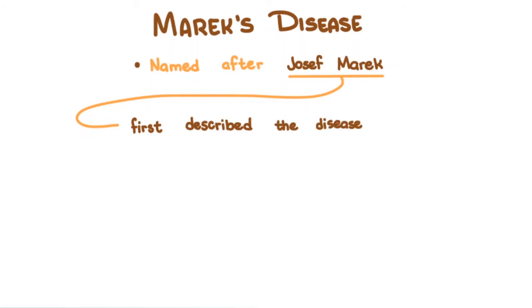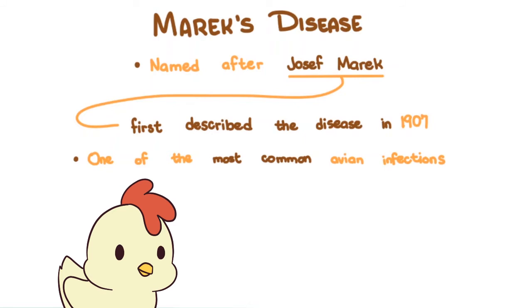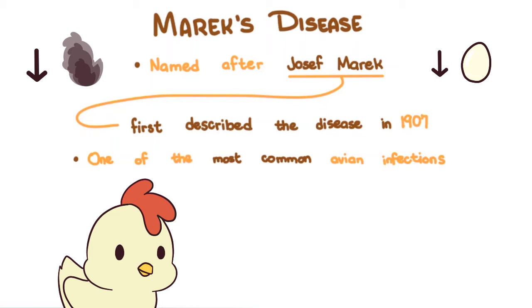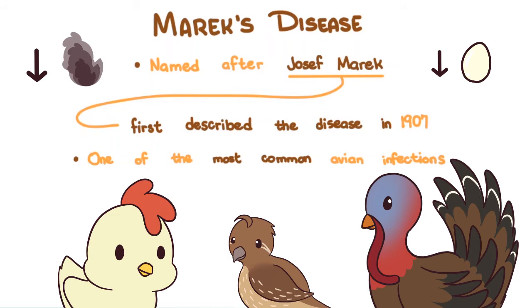Marek's disease is named after Joseph Marek who first described the disease in 1907. It is one of the most common avian infections worldwide. With the exception of strict pathogen-free animals, every chicken is presumed to be infected. But clinical disease doesn't always show. Subclinically, growth rate and egg production may be affected. Chickens are the natural host but quails can be infected too, and turkeys can be infected experimentally.